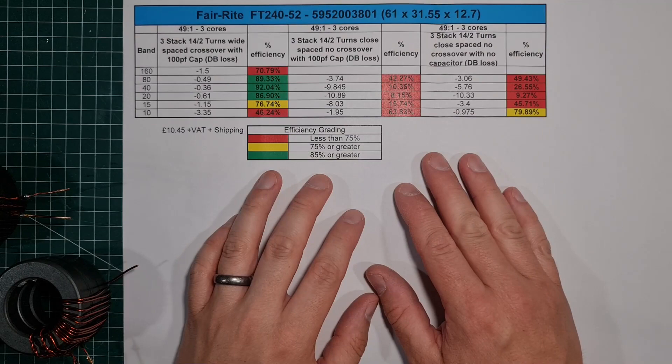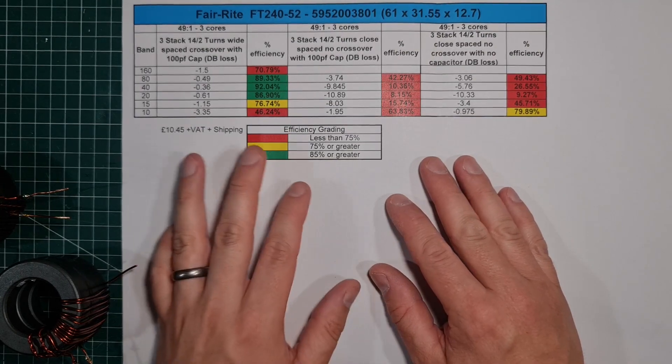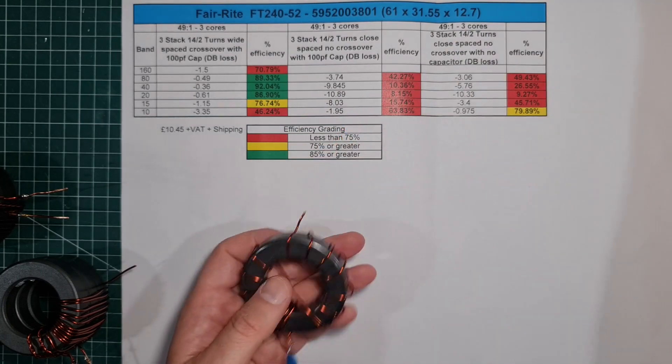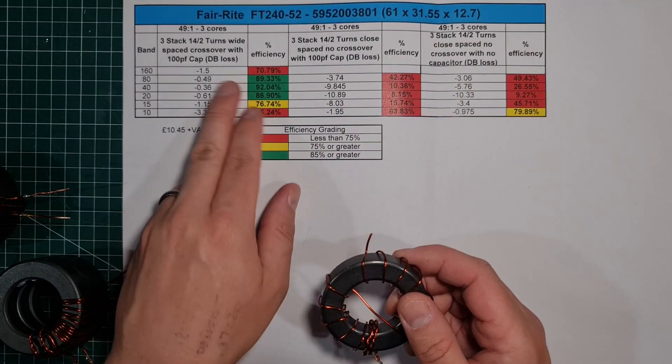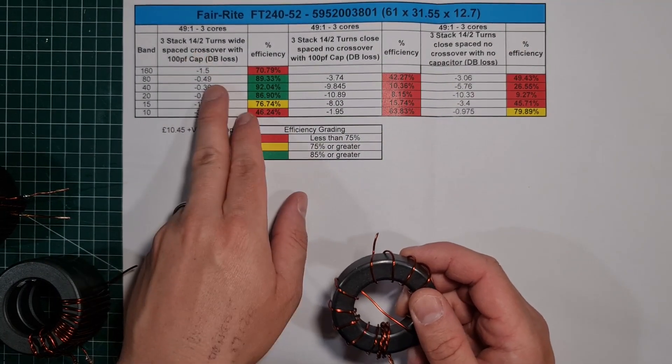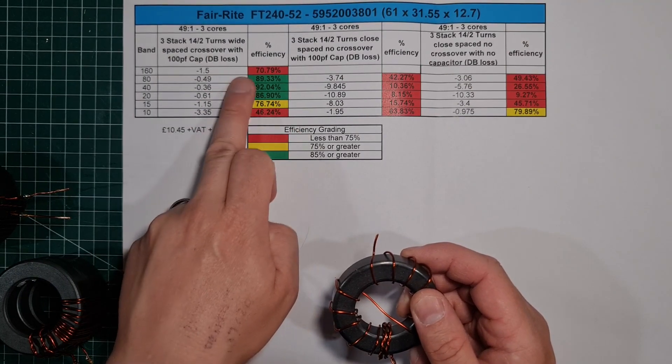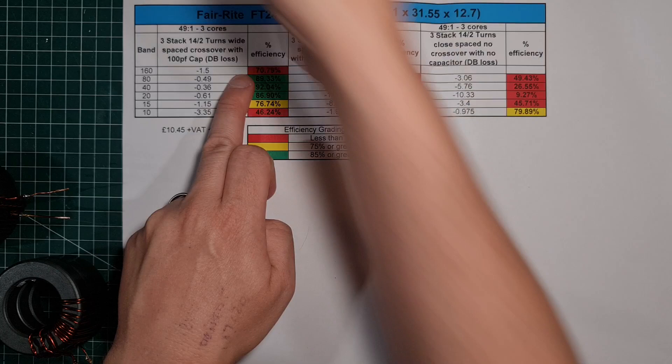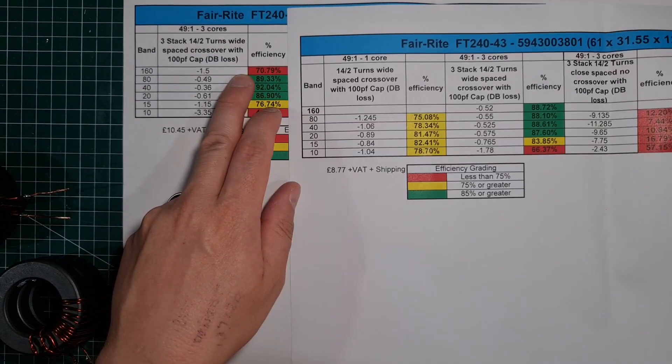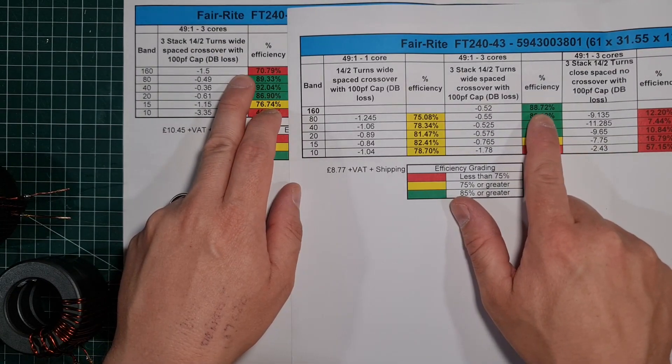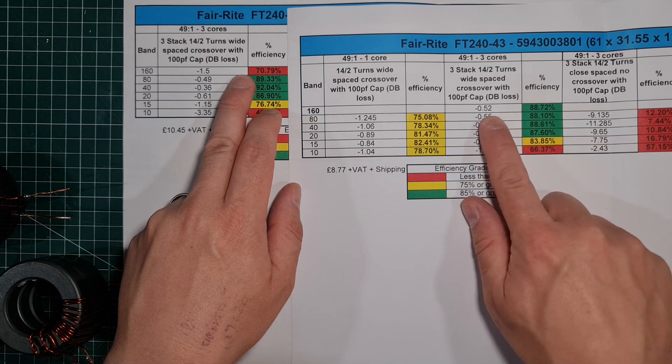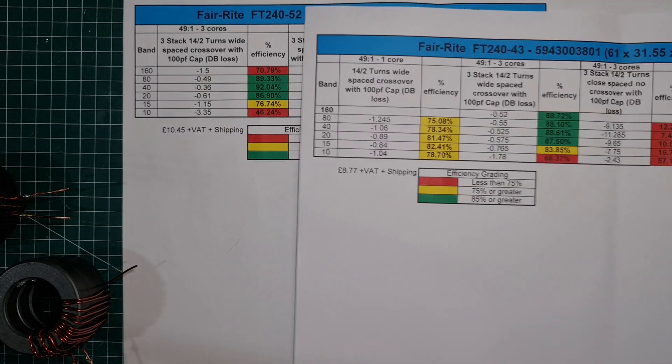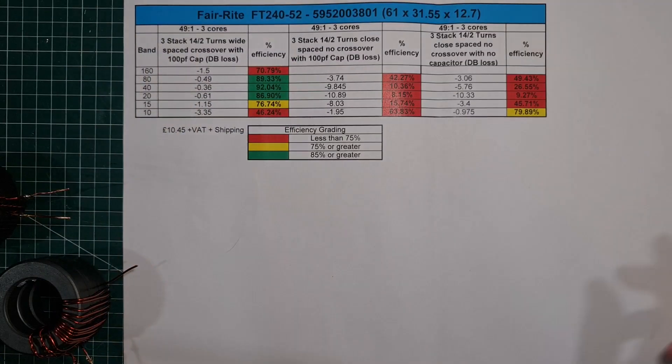Only test I've done with the 52 exactly the same. We did this style of winding, and then we did the close winding. And if you look at the three-stack with the standard winding, you can see it's actually really bad on 160 in comparison to this one. You can see 8.52 loss, 1.5 was three times the loss. I actually thought the 52 material would actually be better on the low bands.